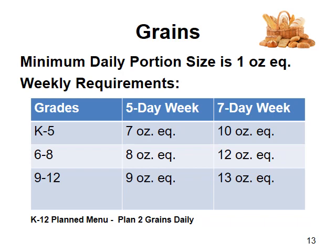The daily minimum requirement for grains is one ounce equivalent for grades K-12. The daily and weekly requirements provide flexibility, but you are required to meet the weekly requirements. The chart shows requirements for both a five-day week and a seven-day week. The five-day weekly requirements are 7 ounce equivalents for grades K-5, 8 ounce equivalents for grades 6-8, and 9 ounce equivalents for grades 9-12. The seven-day weekly requirements are 10 ounce equivalents for grades K-5, 12 ounce equivalents for grades 6-8, and 13 ounce equivalents for grades 9-12. If you plan for two grains daily, you will be in compliance with all the weekly requirements.